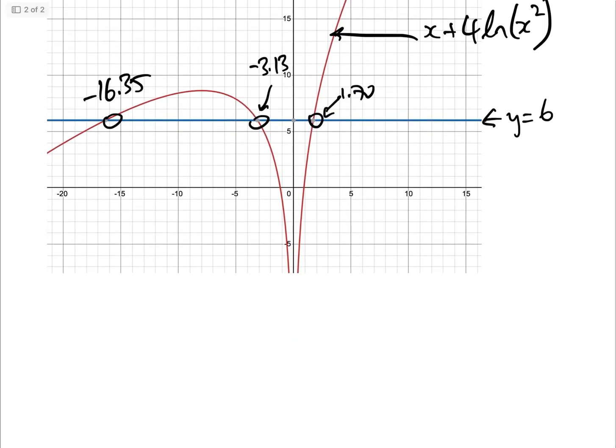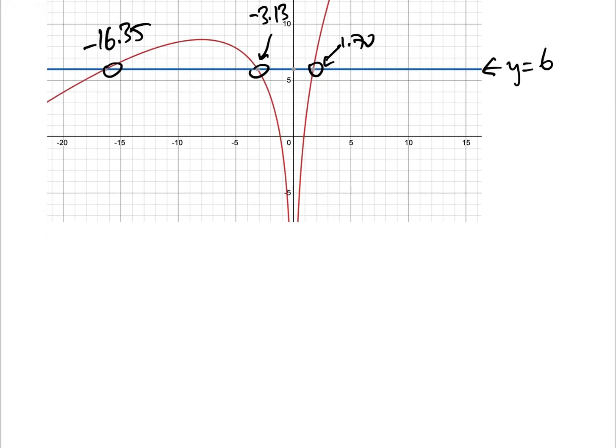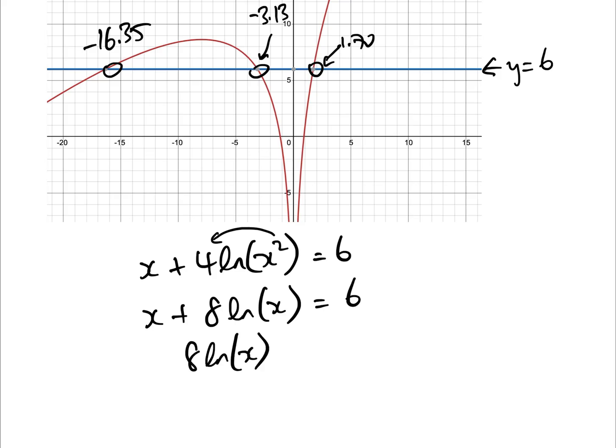Now, a way that some people might do this, which has the risk of not getting all three solutions, let's go right back to the start. So we have x add 4 log x squared equals 6. Now, what some people will do is they'll take the two out there and they'll go, OK, well, that's x add 8 log x equals 6.